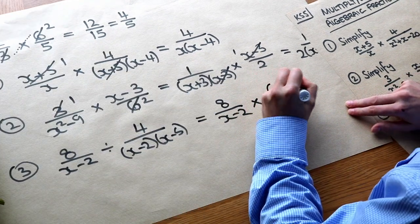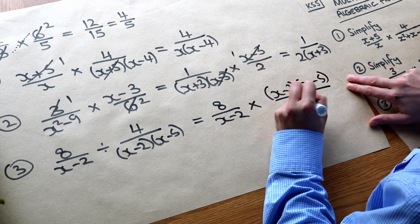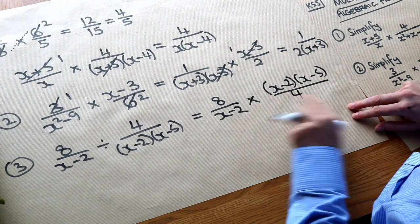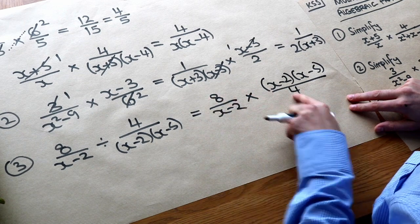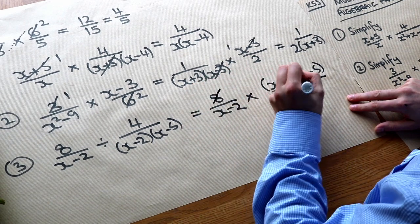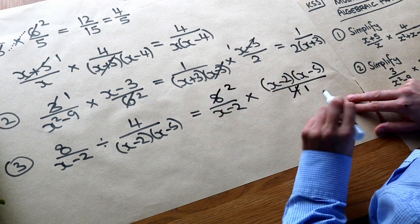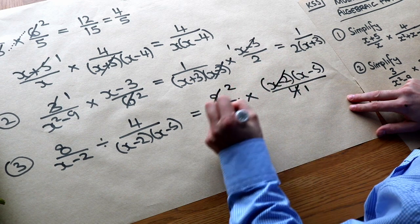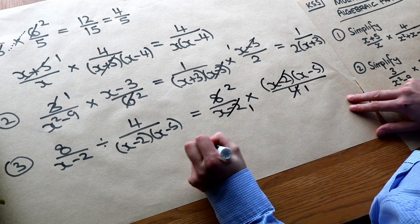So x minus 2, x minus 5 over 4, and then we just cross-cancel as we usually do with a multiplication. So 8 and 4 we can divide them both by 4 to give 2 and 1. We can cross out these x minus 2's, that just becomes a 1, and now that becomes simple.